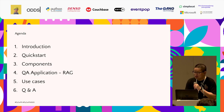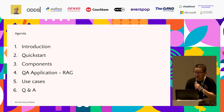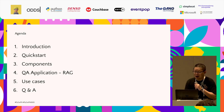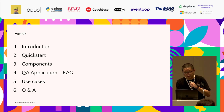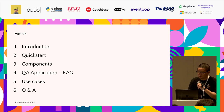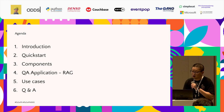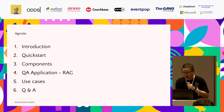First, we will begin with an introduction to the large language model and LangChain. Then we take a quick start on how to use LangChain. Explore what components LangChain provides us for application development. We will see how to use them to develop a question and answer application using the technique called RAG. Before the end, we will take a look at more exciting use cases, and at the end I will take questions from you.